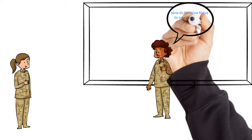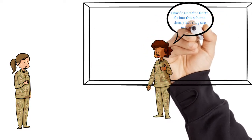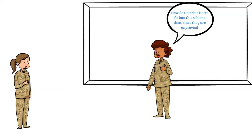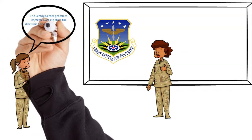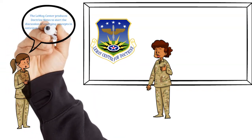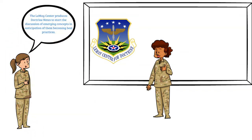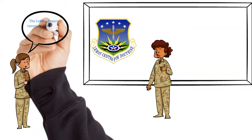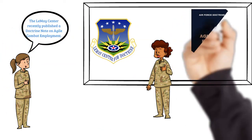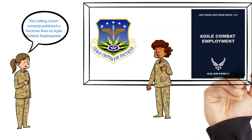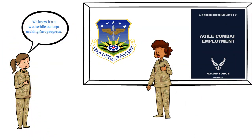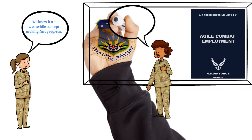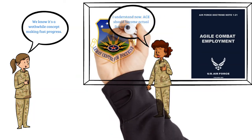What about this new thing called a doctrine note? How do they fit into the overall picture? The LeMay Center produces doctrine notes to start the discussion of emerging concepts, in anticipation of them becoming best practices in the near future. Agile combat employment is being rigorously tested worldwide as a means to meet future threats. Since it's a worthwhile concept making fast progress, the LeMay Center recently published a doctrine note to capture what's being done, in anticipation of the practices becoming validated doctrine very soon.